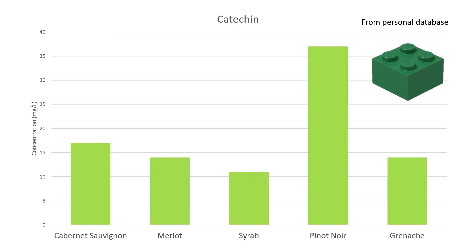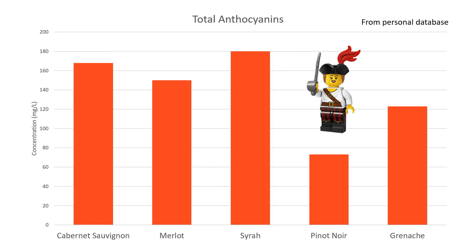Now looking at catechin — our small, more bitter seed tannins, the building blocks of larger tannin structures. The Syrah versus Pinot comparison is super telling: Pinot Noir, just as a variety, naturally has more catechin. And if we're growing Pinot in cooler, more marginal climates, we're going to have even more catechin because we'll have potentially less ripe seeds. And now total anthocyanins — our Lego pirates. Syrah tends to be the most deeply pigmented variety. Cab and Merlot are dark, but not as dark as Syrah. Pinot is way less colorful. And Grenache is known for its very light color — still a little more than Pinot, but quite different from Cab, Merlot, and Syrah.